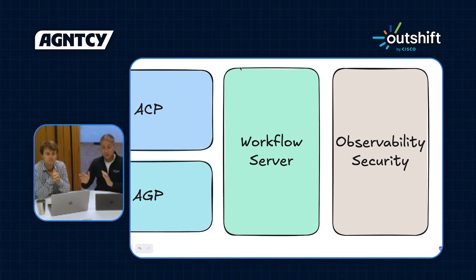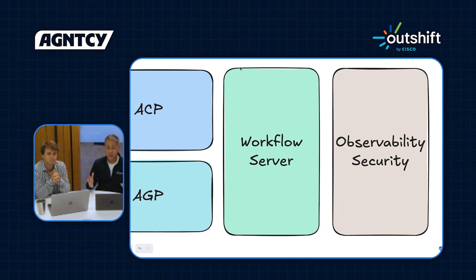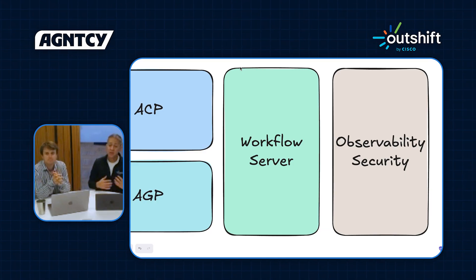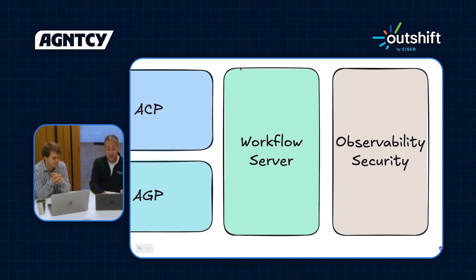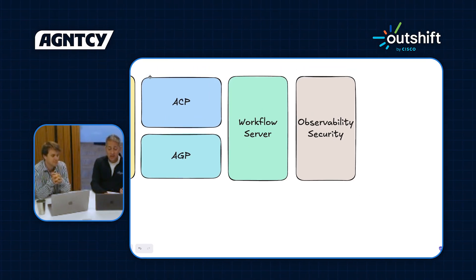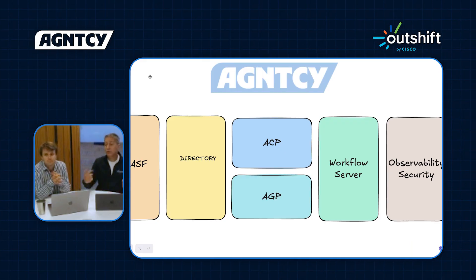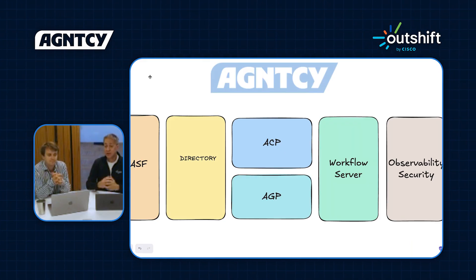Coming later, we're going to be adding observability and security, which is of utmost importance. You have to observe what's been going on — there'll be some OpenTelemetry coming — and security features including role-based access and agent identity. These are the major components of Agency. Take a look at the briefings we've got coming up and the longer-form videos where you can get examples for each of them.